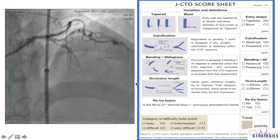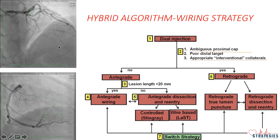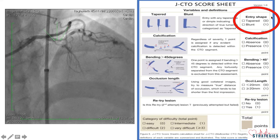Coming to the analysis of CTO, if you analyze with the JCTO score, there is an ambiguous cap. With angiogram we are not able to make out where the entry point is, but it looks like some nipple here but I'm not sure if it is really diagonal or the nipple of the LAD. Angiographically it looks like the entry point is somewhere here, and otherwise this segment is not angulated, there is no calcium, and the occlusion length is less than 20 millimeters. Overall there is only an ambiguous cap, so JCTO score 1 — it is an intermediate kind of CTO.